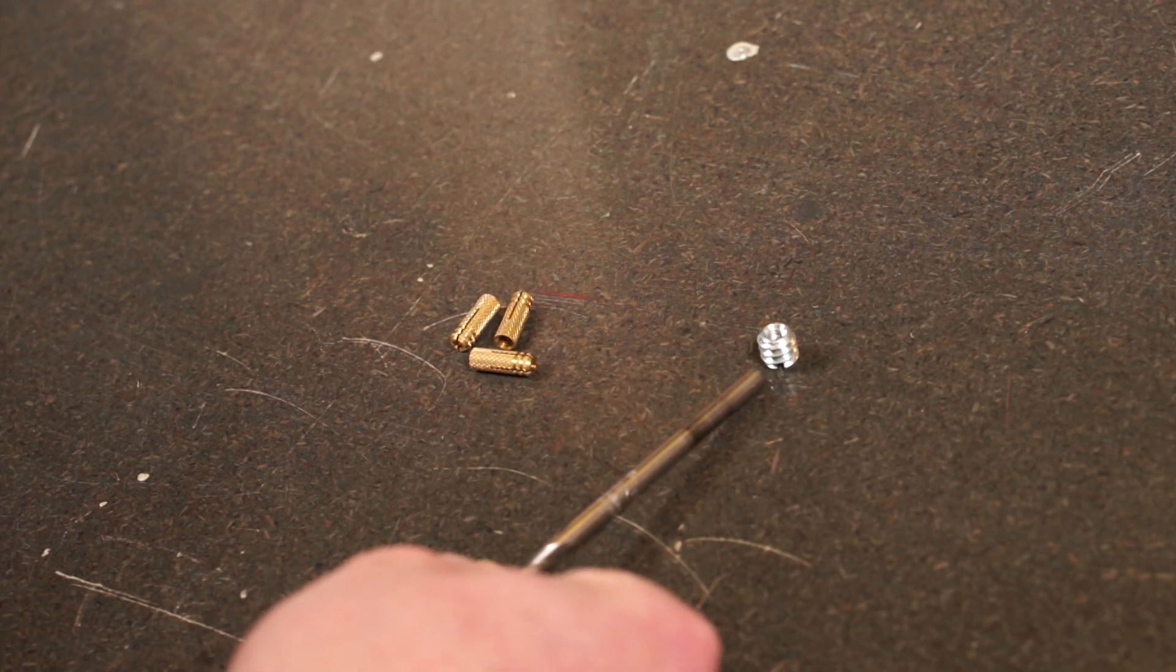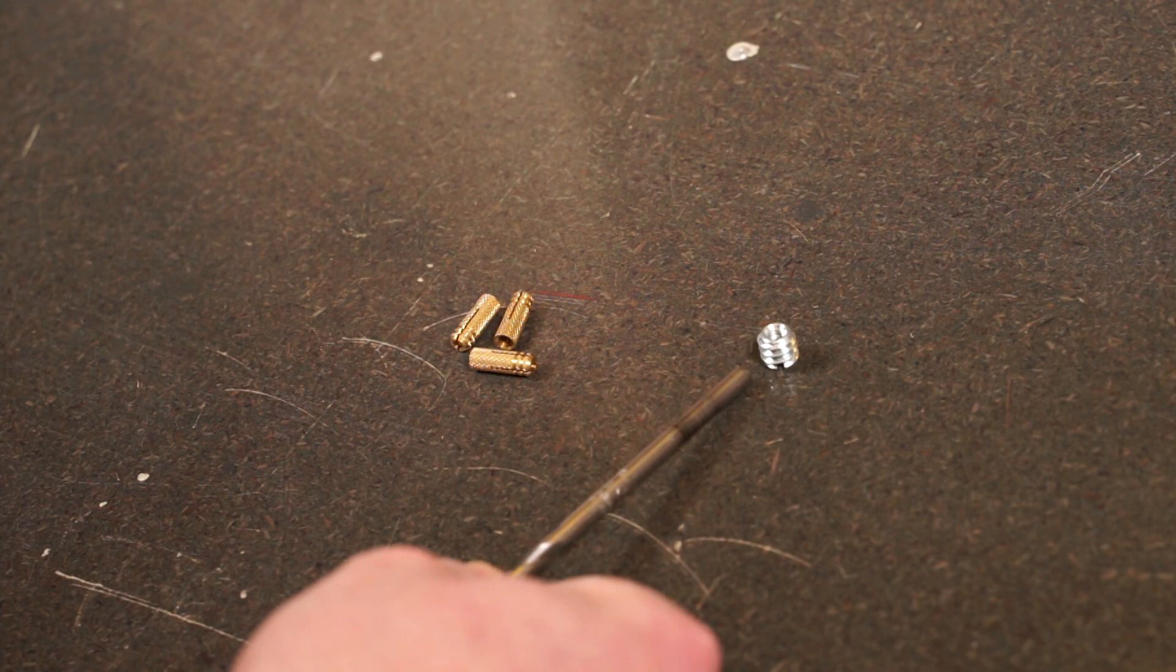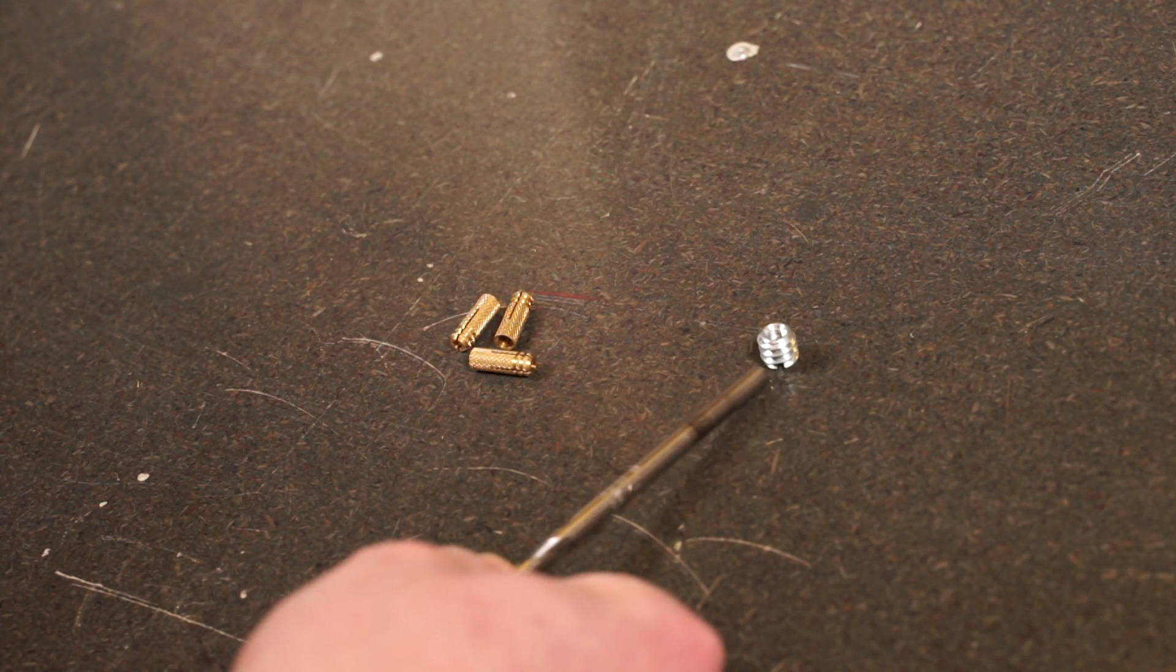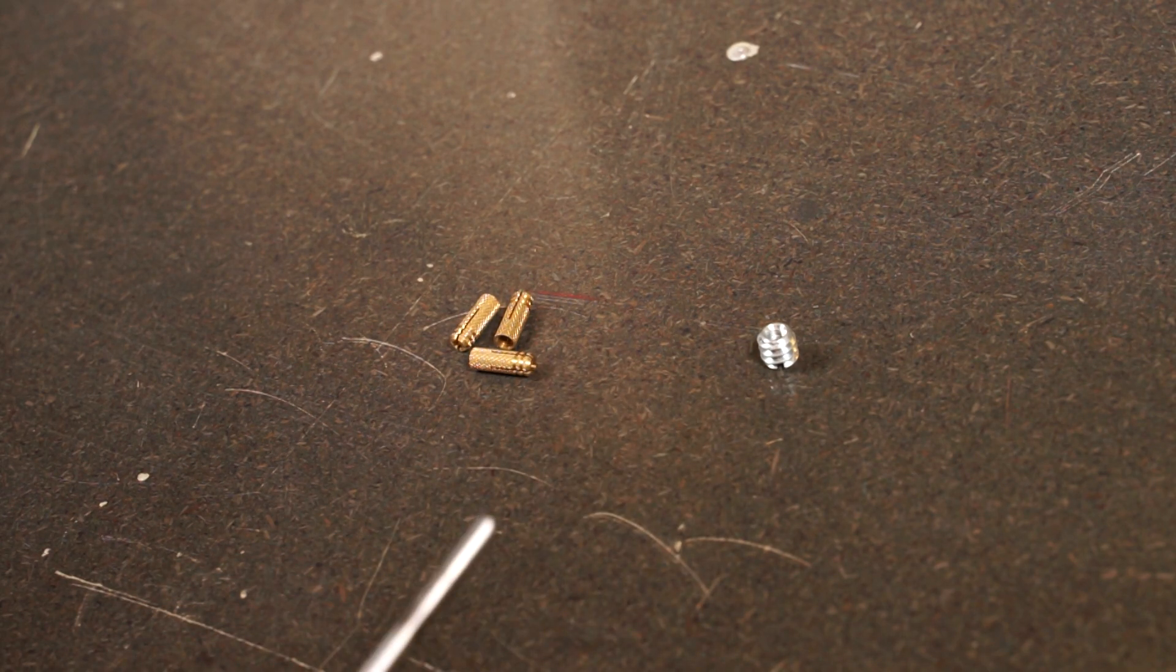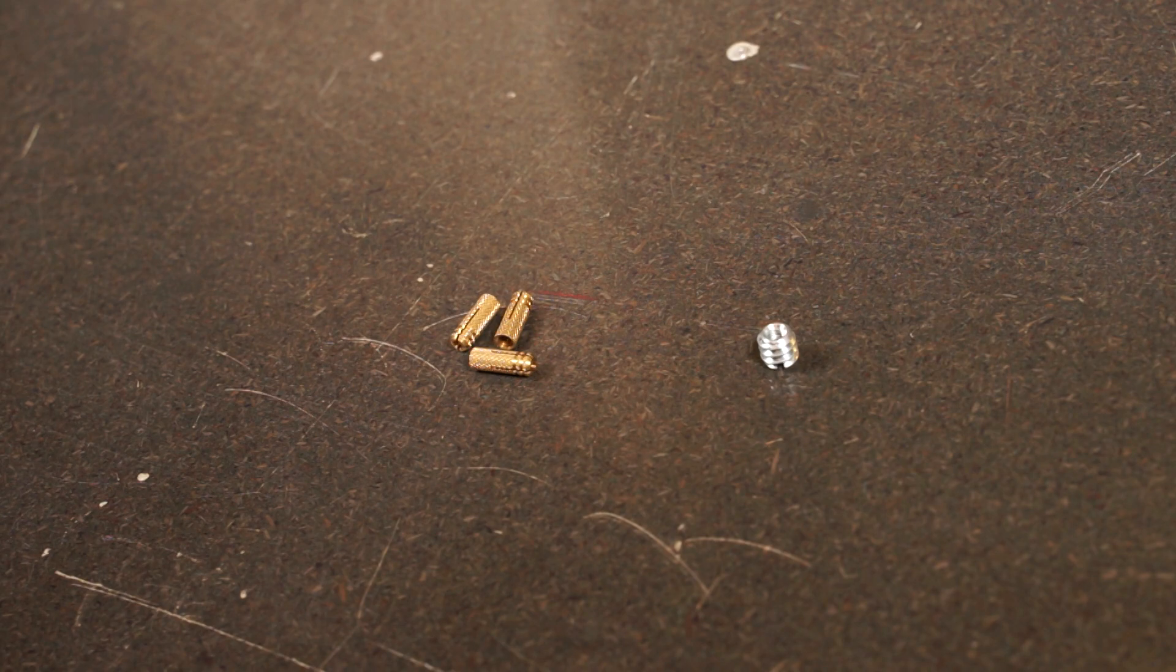This is a threaded insert for use in wood. It has a wood thread on the outside. In this case an M5 thread on the inside. And the wood thread being large as it is should provide a lot of surface for this injectable mortar to grab onto.